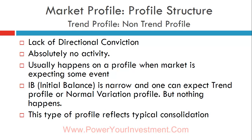The next profile is the non-trend profile. As the name suggests, it is an extremely low directional conviction profile — better for traders to stay away. It usually has a narrow initial balance, and as traders we start positioning ourselves for a trend or normal variation day, but nothing happens. The price just keeps rotating, which is frustrating on two counts: the price doesn't move, and because the initial balance was narrow, we anticipate potential gains that never materialize. This kind of profile usually develops when the market has run up significantly and just consolidates — pausing before moving up again after two or three days.